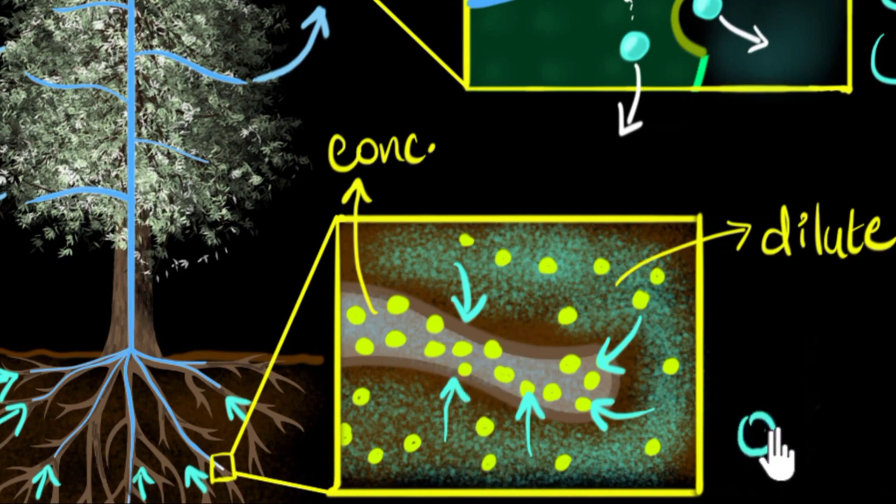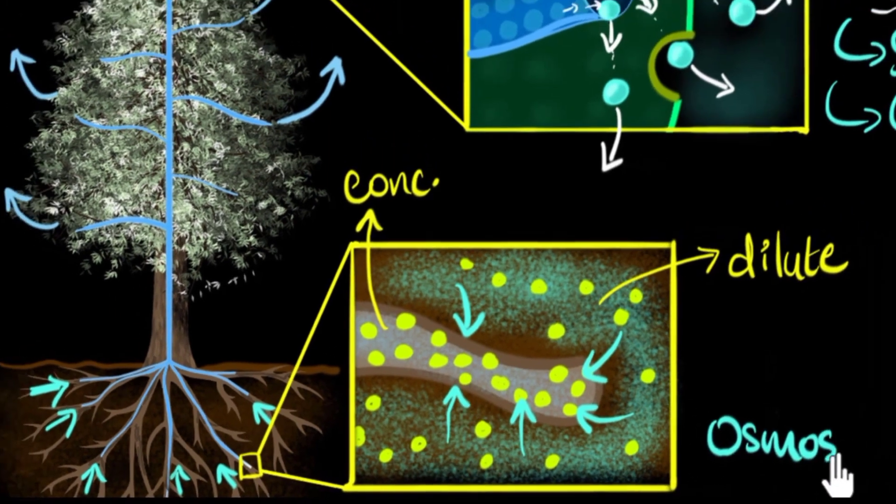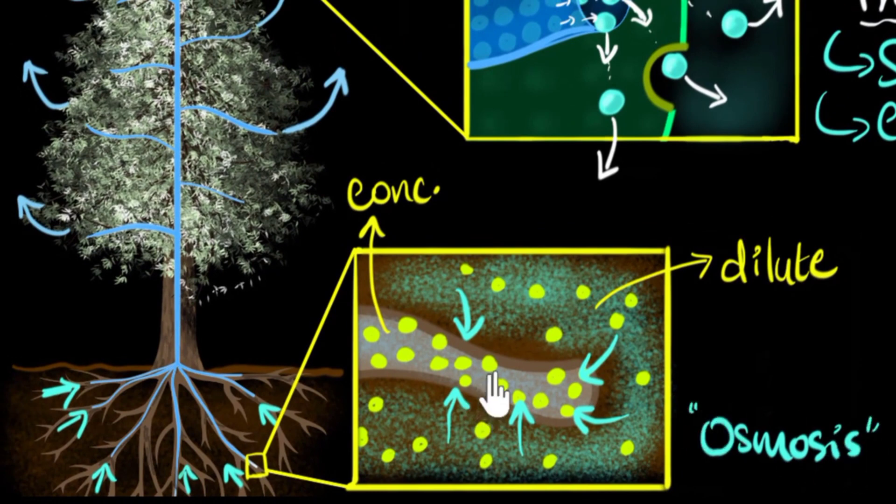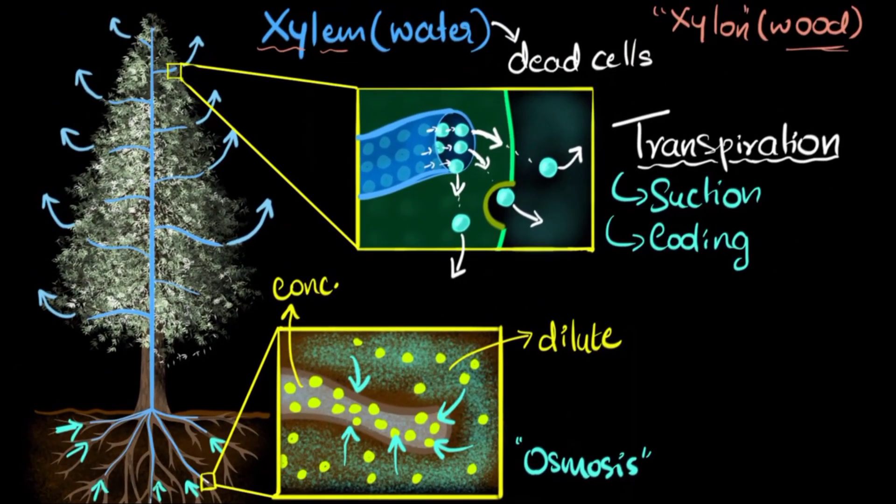You may have heard of this process. This process is called osmosis. It's a special kind of diffusion in which particles don't move from higher concentration to lower concentration, but instead the water starts moving from lower concentration to higher concentration. But the idea is the same: to balance the concentration. And as a result of this osmosis, now can you see that because water is rushing in, it starts pushing on the column of the water that's already present over here? And that's what causes the pressure from the bottom. This is called the root pressure.